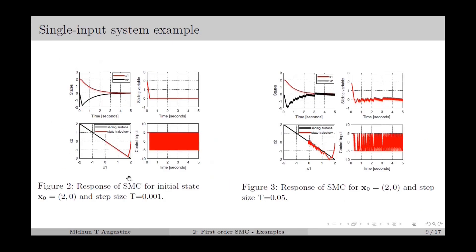Figure 2 shows the response of the first order SMC for the initial state (2, 0) with a sampling period of 0.001. Both states x1 and x2 are converging to zero, and the sliding variable is also converging to zero. The plot of the state trajectory shows that it follows the arc of a circle, eventually hits the sliding surface, and after that slides through the surface towards the origin. Once the state trajectory hits the sliding surface, the control switches between plus k and minus k, which is plus five and minus five.